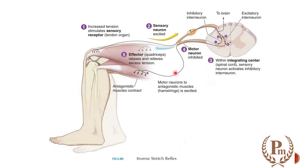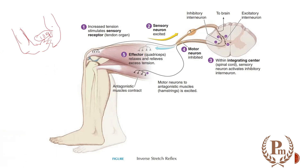Here is the inverse stretch reflex. When you increase the tension in the tendon organ, consider a person's biceps asked to hold a load of 10 kg. The stretching of the muscle causes contraction, allowing the person to hold 10 kg. If another 10 kg is added and the muscle is not strong enough to hold 20 kg, the person will relax and the weights will fall down.